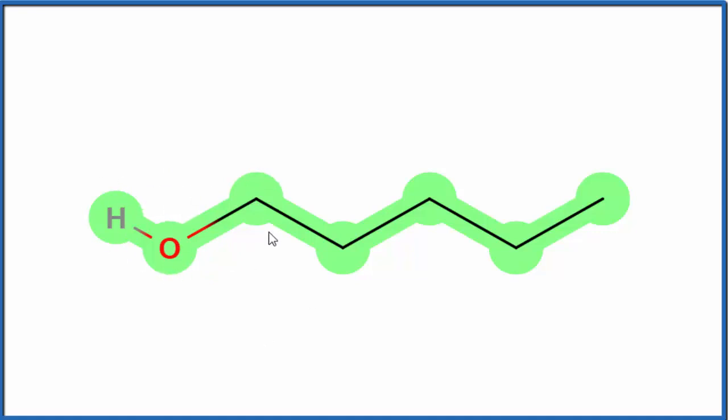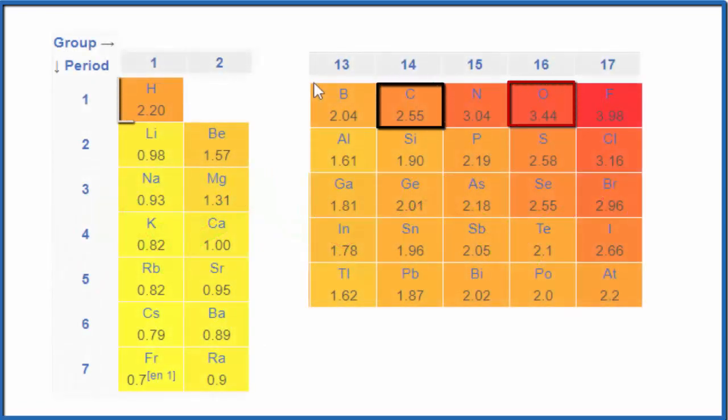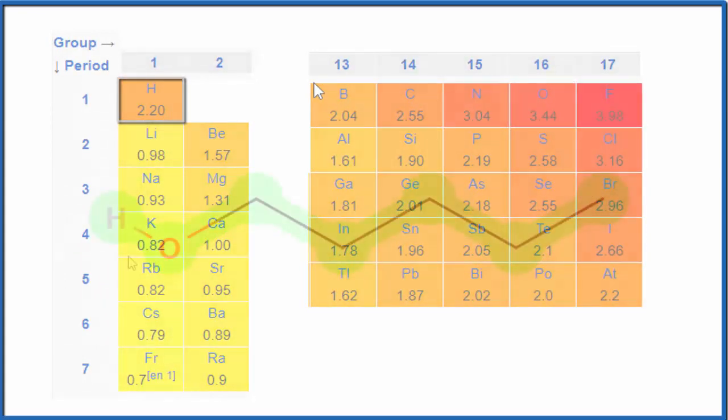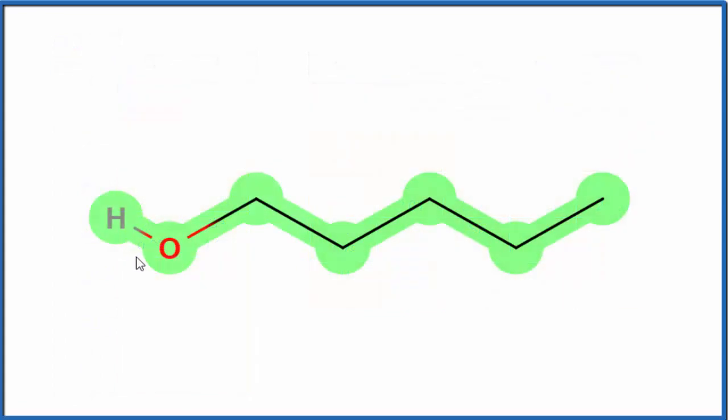So it's a polar molecule because if we look at this structure here, the oxygen is more electronegative than the hydrogen or the other carbon there. That means the bond here between the oxygen and the carbon and the oxygen and the hydrogen, the electrons won't be shared equally there.